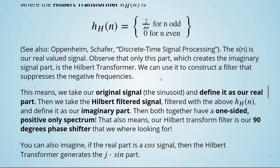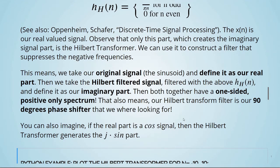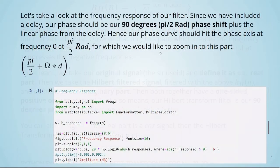This means we take our original signal, the sinusoid, and define it as our real part. Then, we take the Hilbert-filtered signal, filtered with the above h_h, and define it as our imaginary part. Then, both together have a one-sided positive-only spectrum. That also means our Hilbert-transform filter is our 90-degrees phase shifter that we were looking for. You can also imagine that if the real part is a cosine signal, then the Hilbert transformer generates the j times sine part. Since we have included a delay, our phase should be our 90-degrees phase shift plus the linear phase from the delay. Hence, our phase curve should hit the phase axis at frequency zero at π divided by 2.